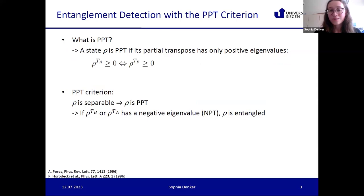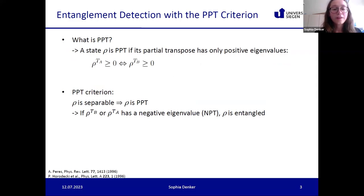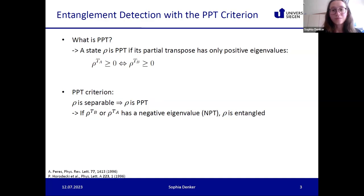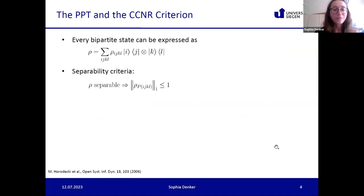PPT means positive partial transpose. If we have some quantum state rho and we make the transposition with respect to Alice's or Bob's system and then we only have positive eigenvalues, we call the state PPT. We can use this as a criterion to decide entanglement: if rho is separable then it is PPT, and if we take the partial transposition T_A or T_B and find a negative eigenvalue, then the state rho must be entangled.